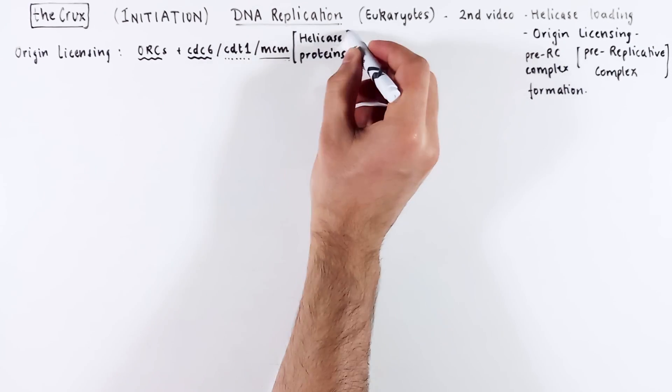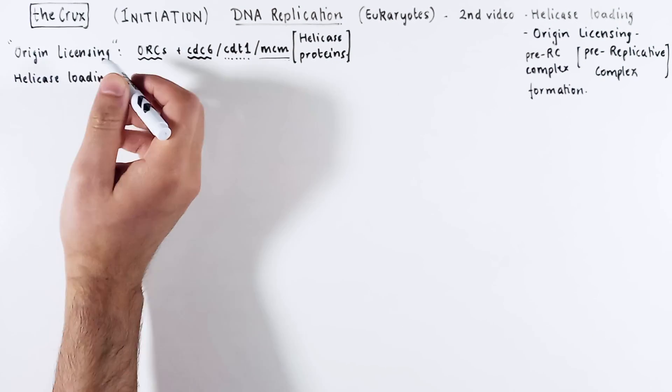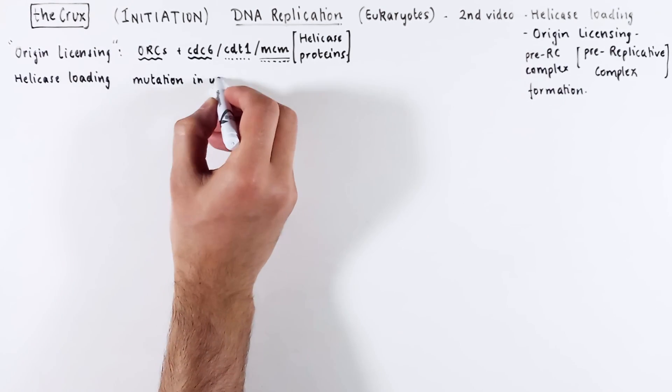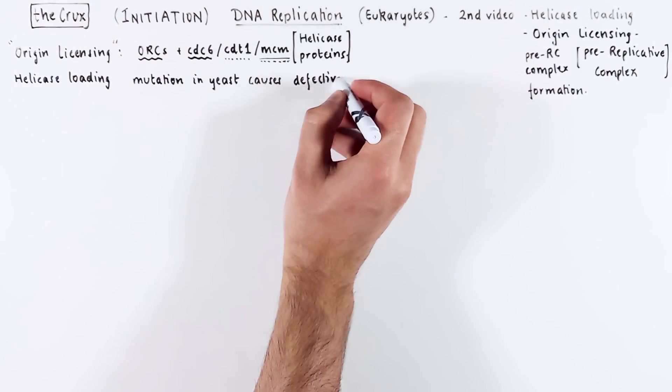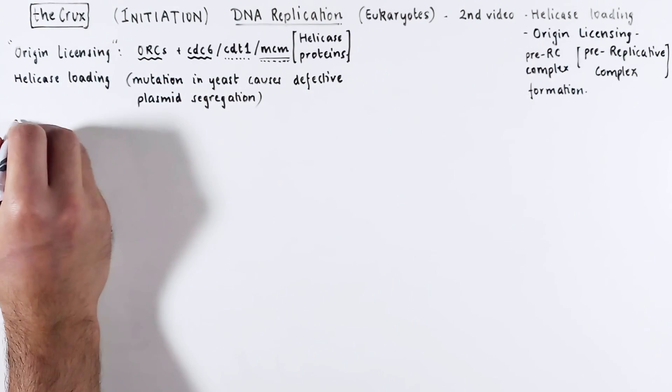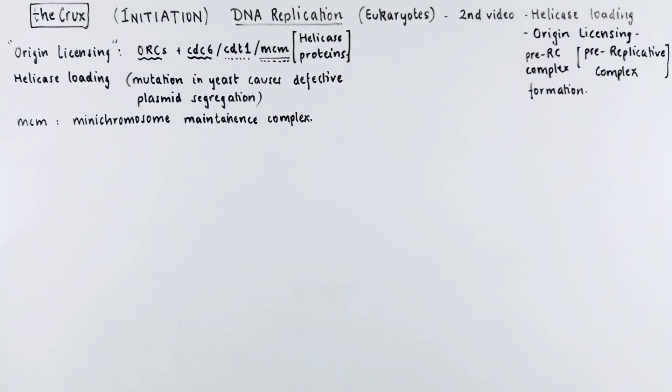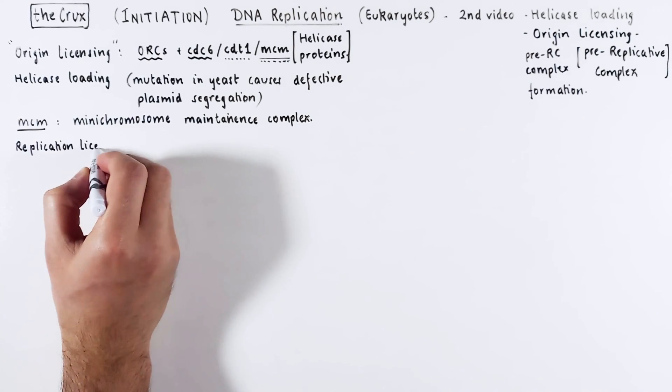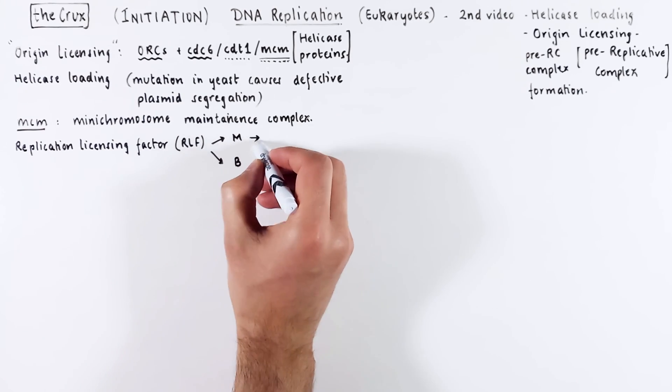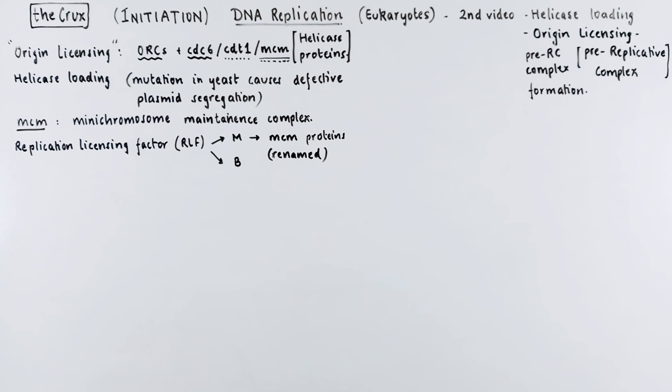By the way, MCM proteins are what make up the helicase in eukaryotes. So essentially when we talk about origin licensing, we're talking about helicase loading. Just a side note, MCM proteins were discovered in yeast when mutating MCM resulted in a plasmid segregation defect. For that reason, MCM proteins stand for mini chromosome maintenance complexes. Historically speaking, the MCM proteins were called replication factors. One of the papers uncovered two fractions of RLF and the RLF M fraction contained the MCM proteins. MCM nomenclature was adopted much later.